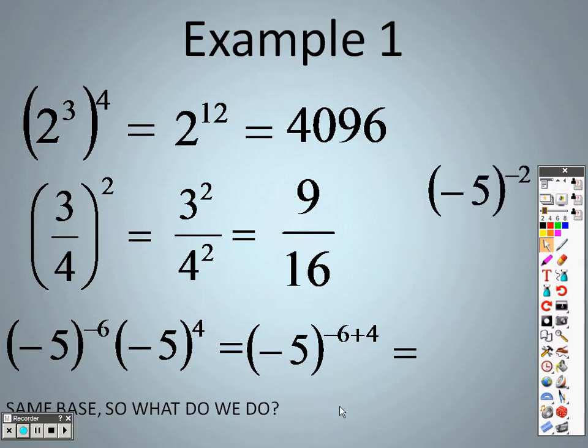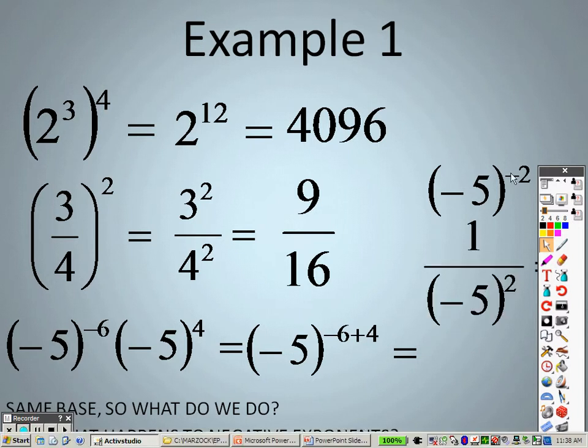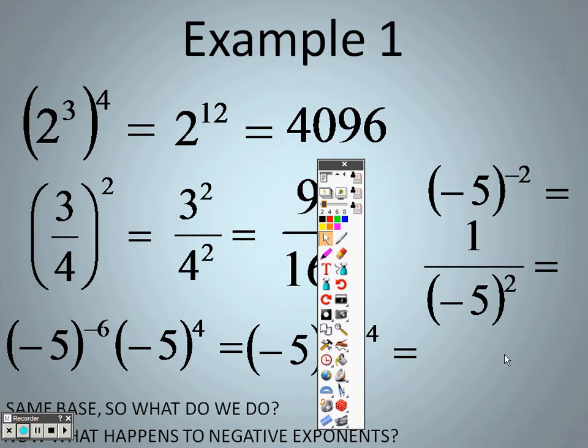Negative 6 plus 4 is negative 2. And since we can't have negative exponents, that means I actually have 1 over negative 5 squared. And 1 over negative 5 squared is negative 5 times negative 5, which is 25, so the answer is actually 1 over 25.